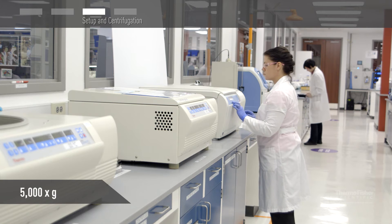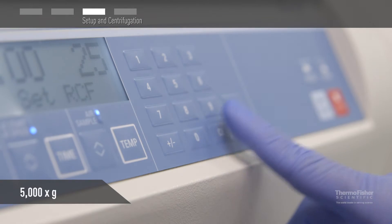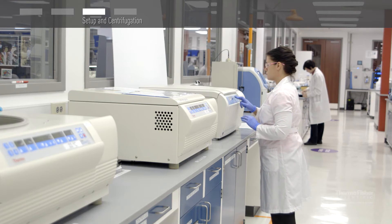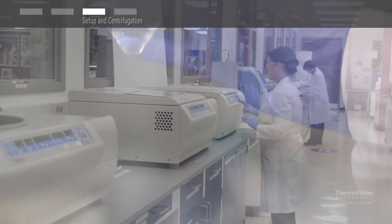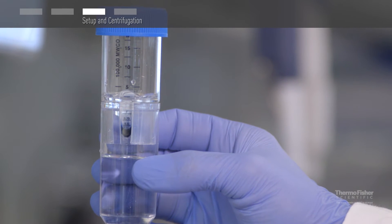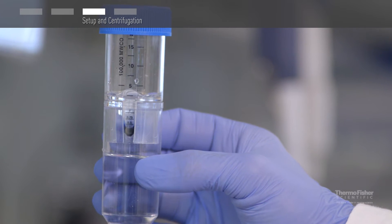Centrifuge up to 5,000 times G until your desired concentration factor is achieved. The dead stop volume is 50 microliters. The retentate volume can be visually monitored through a clear window with graduations on the side of each device.